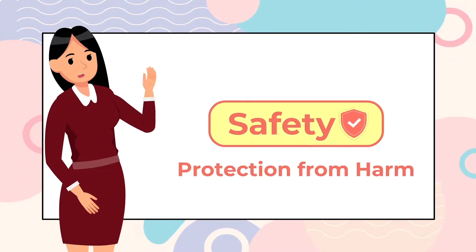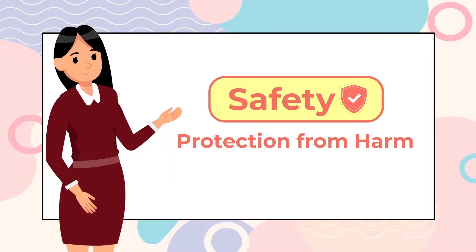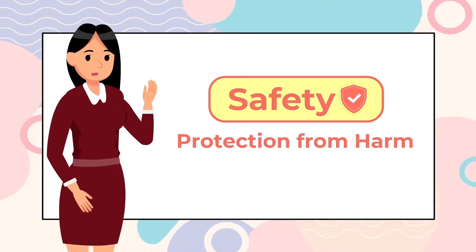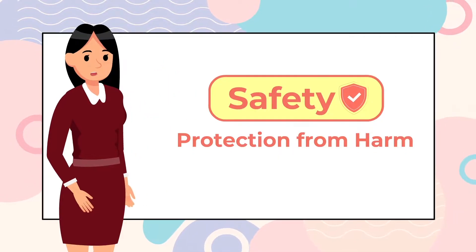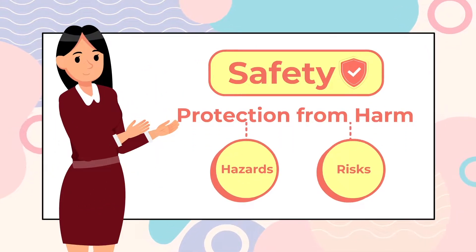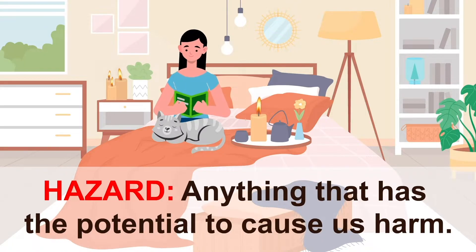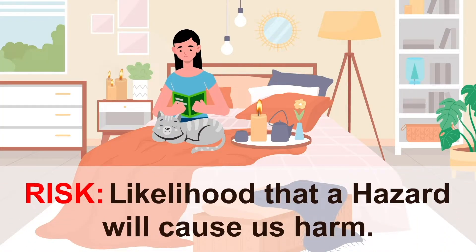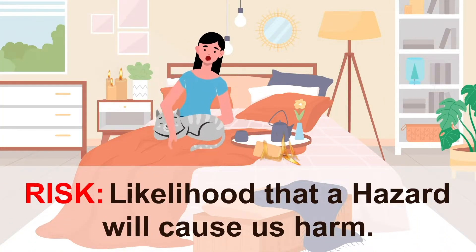Safety is about protecting ourselves and each other from harm. We can be even more effective at practicing safety if we know how to look out for hazards and risks. A hazard is anything that has the potential to cause us harm and injure us. A risk is the likelihood that a hazard will cause us harm.